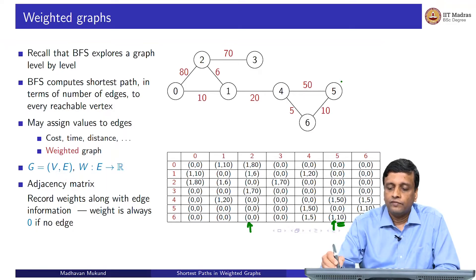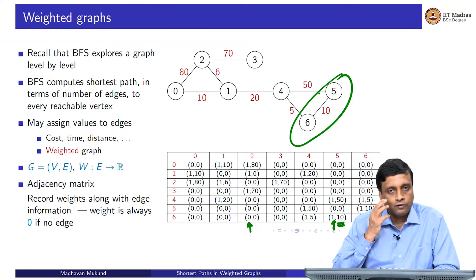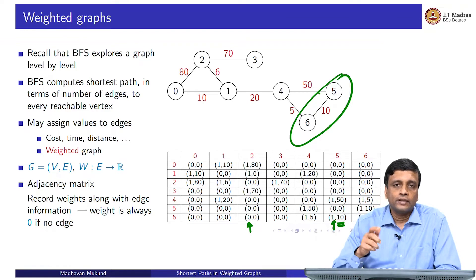If I look at 6 to 5, that is this edge, then it tells me that the weight of the edge from 6 to 5 is 10. This is one way of representing a weighted graph as a weighted adjacency matrix.